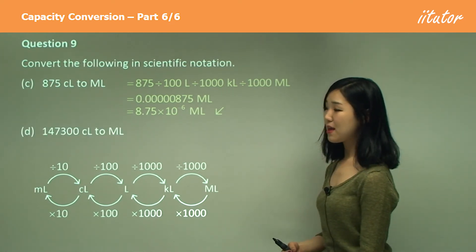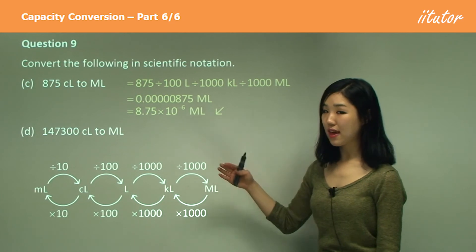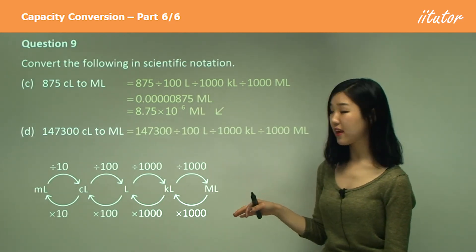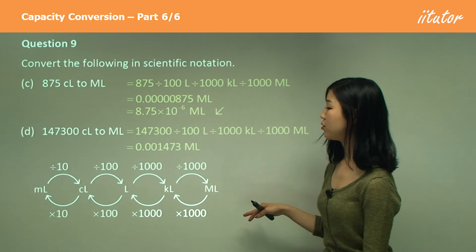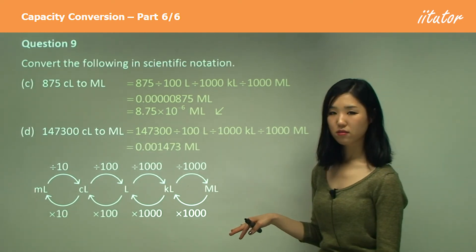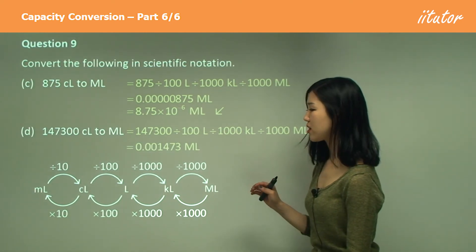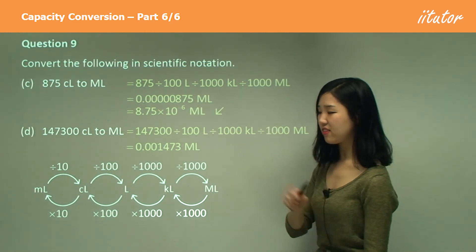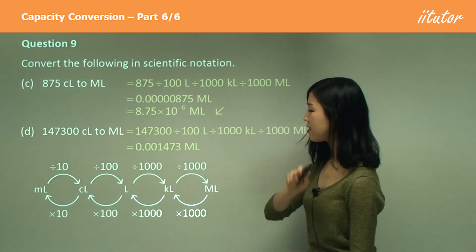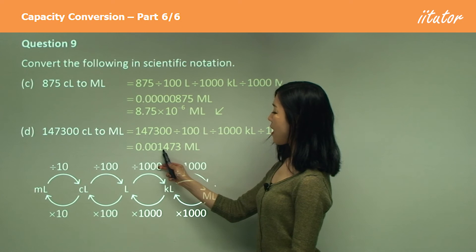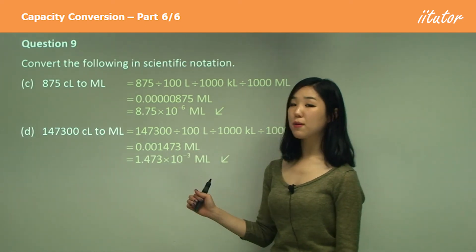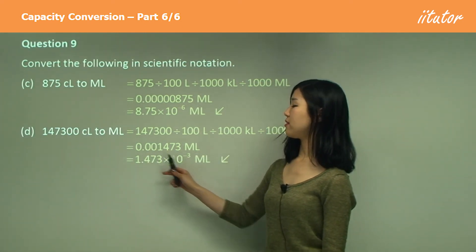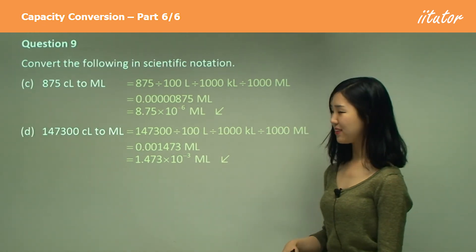And D — same conversion again: divide by a hundred, a thousand, and then a thousand again, which looks like that. I'll go through this quickly because I think you get the idea with the zero parts. Put the decimal there and go back three places to the original decimal point. So it's 10 to the power of negative 3.